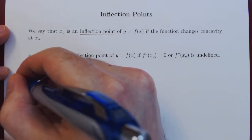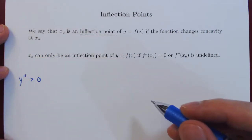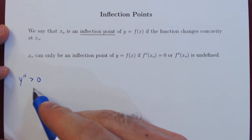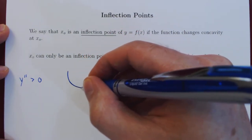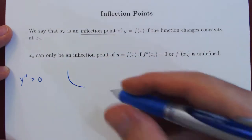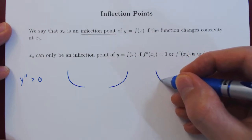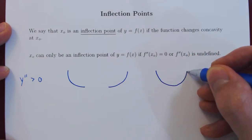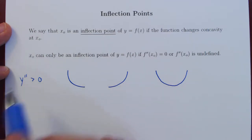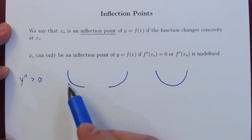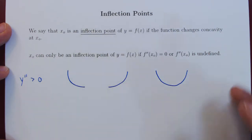In the first case, if the second derivative is always positive on some interval, then the curve is always concave up. It could be concave up and decreasing, concave up and increasing, or concave up decreasing then concave up increasing. But regardless, on any given interval, if the second derivative is always positive, the curve is always concave up — therefore no change in concavity.